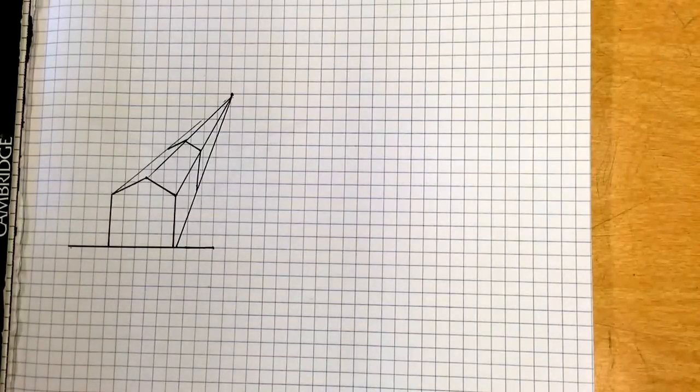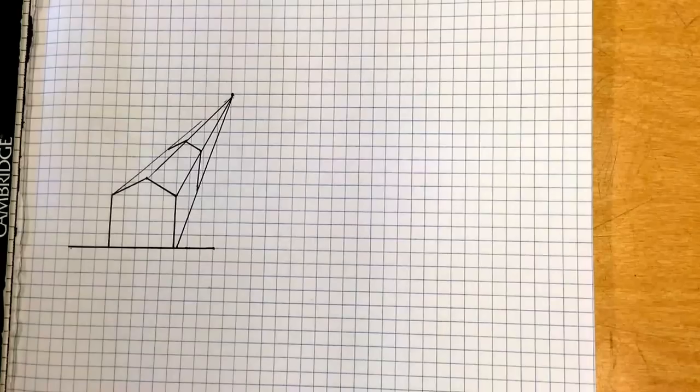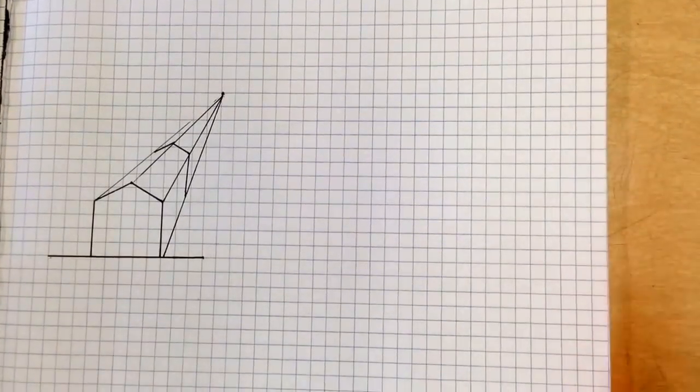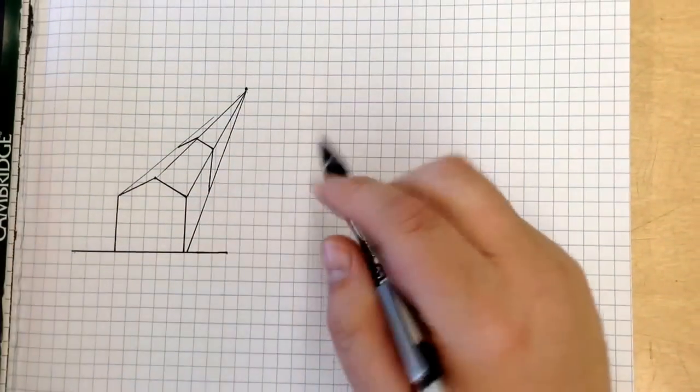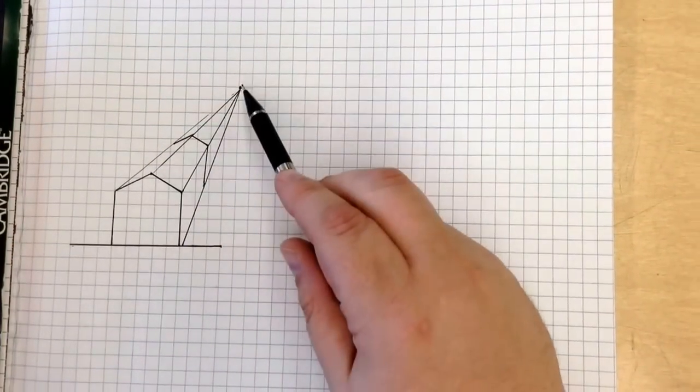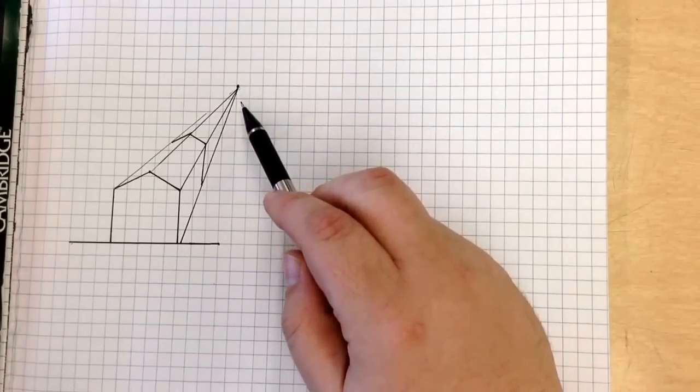We are going to take a few minutes and do a one point perspective, or a vanishing point drawing. This right here is my vanishing point, and you can see that it's sort of a barn shape, and it fades off into the vanishing point.